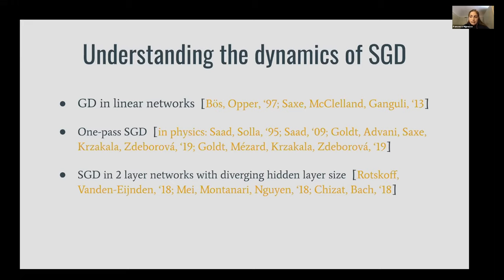These cases are linear networks trained with gradient descent, or the one-pass stochastic gradient descent algorithm where at each iteration the gradient is computed on a new sample that has never been seen before, and also in the case of two-layer networks with a diverging number of hidden units.